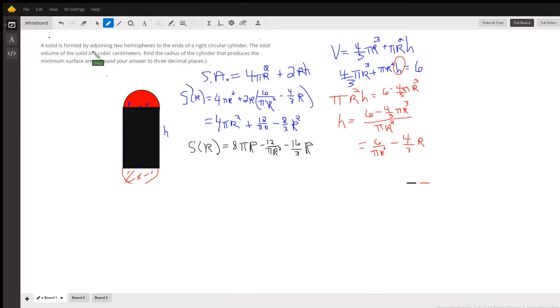Okay, we've got this solid that's created by adjoining two hemispheres to the ends of a right circular cylinder. Given the total volume of six cubic centimeters, find the radius that minimizes the surface area of that object.